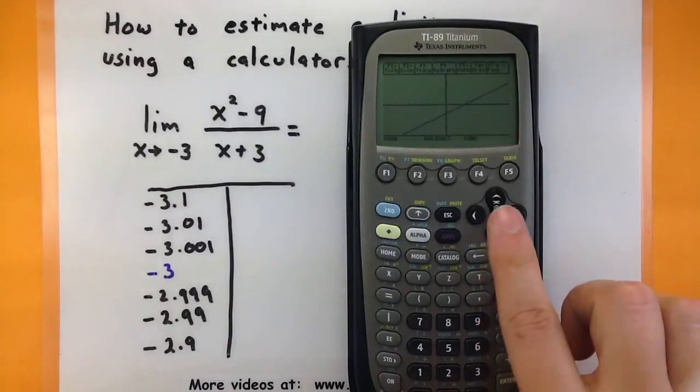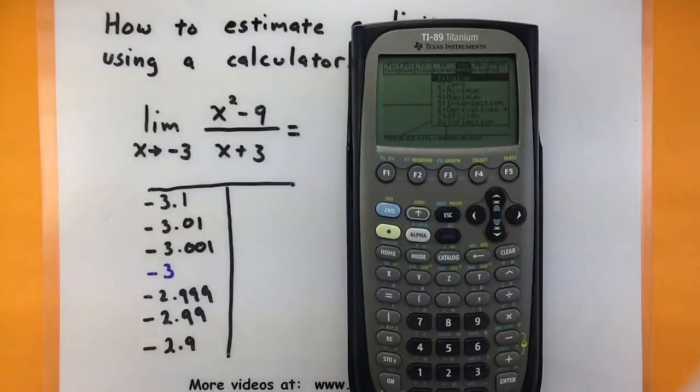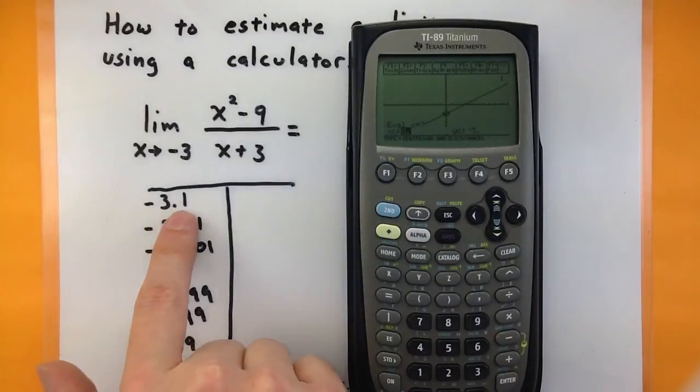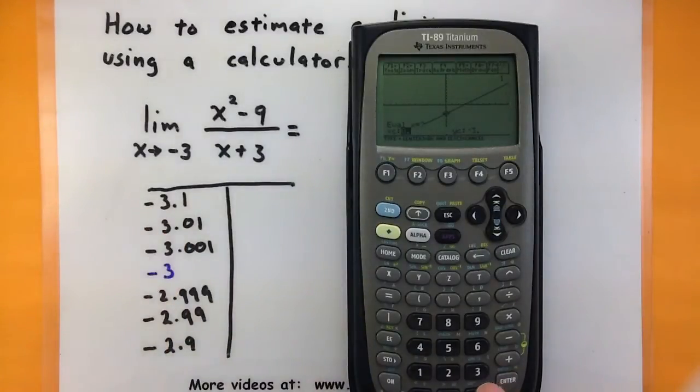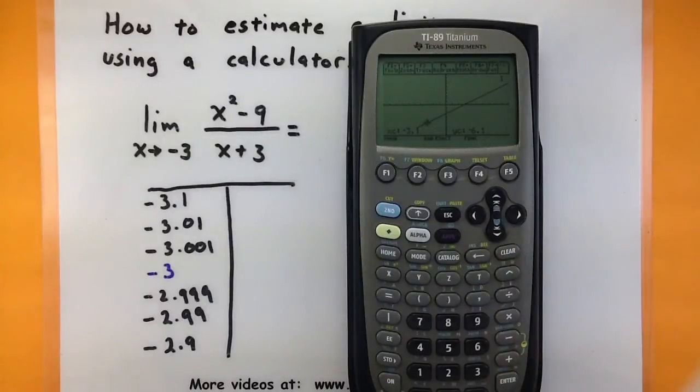To find that, I will press my F5 for math. And then the first option says value. So I'll press enter. I'll first give my function the value of negative 3.1. So negative 3.1. And press enter. Then I can read off the y value of the function. It looks like it's at a negative 6.1.